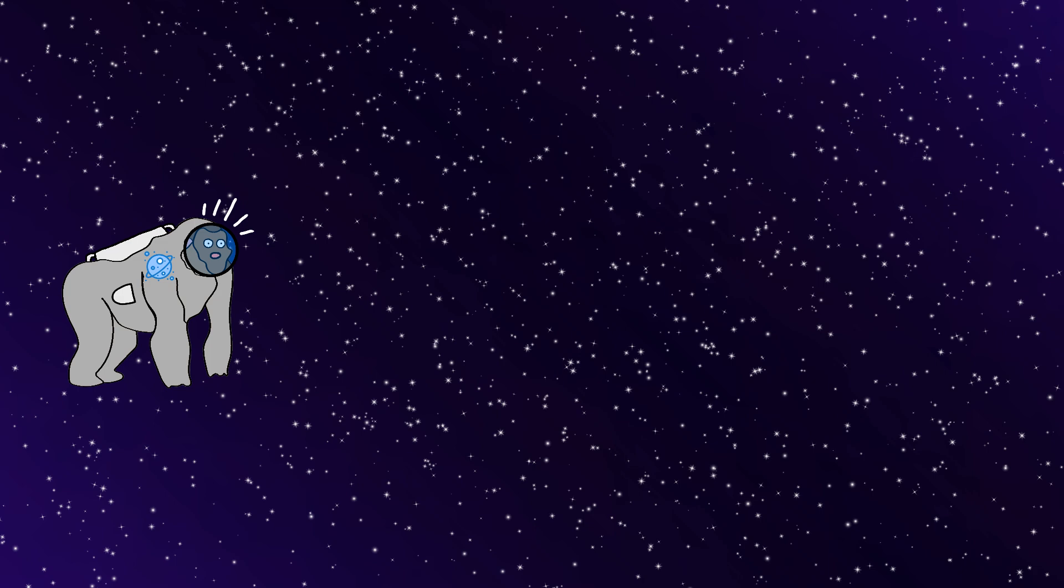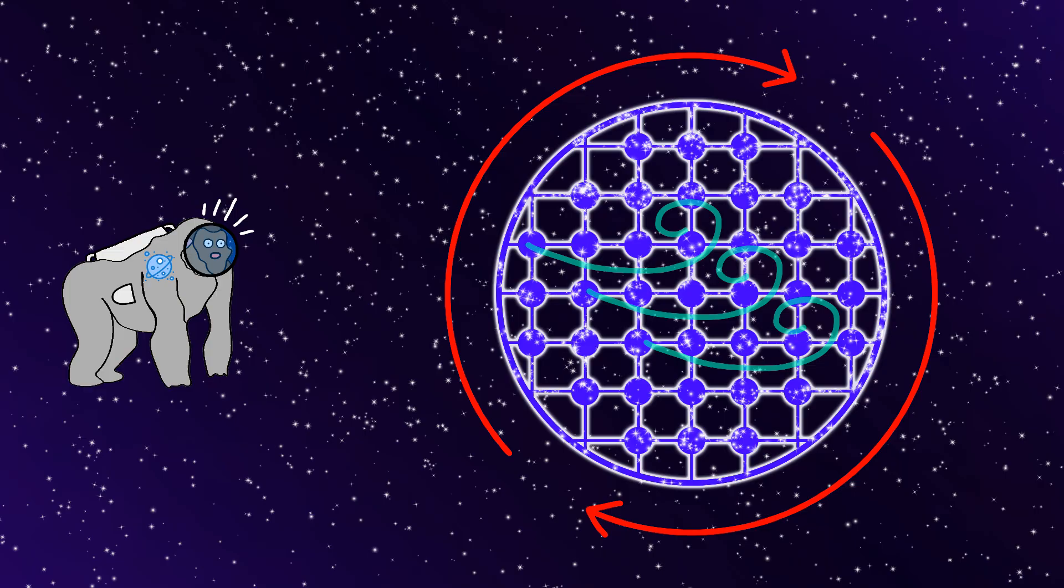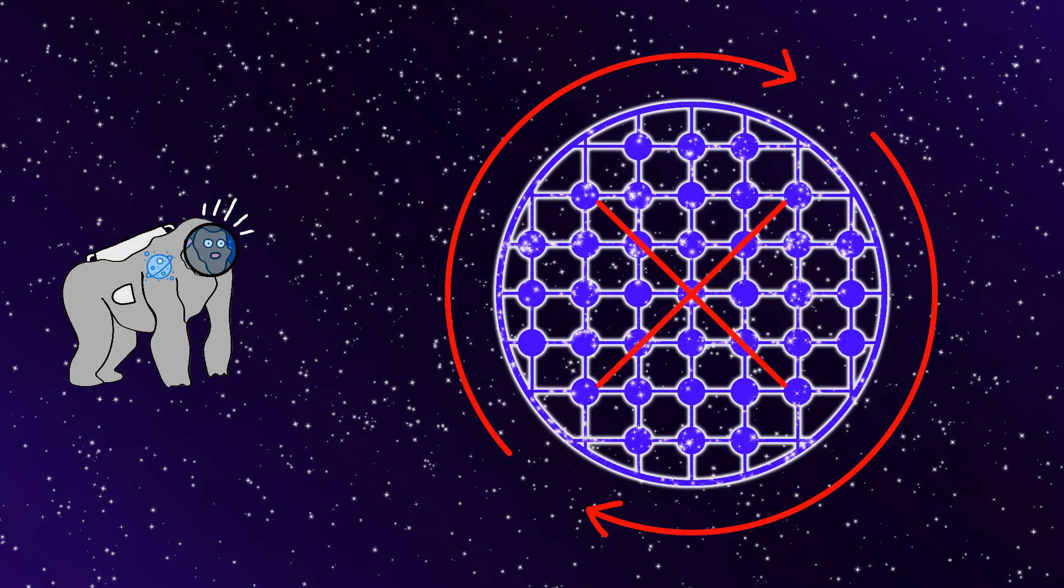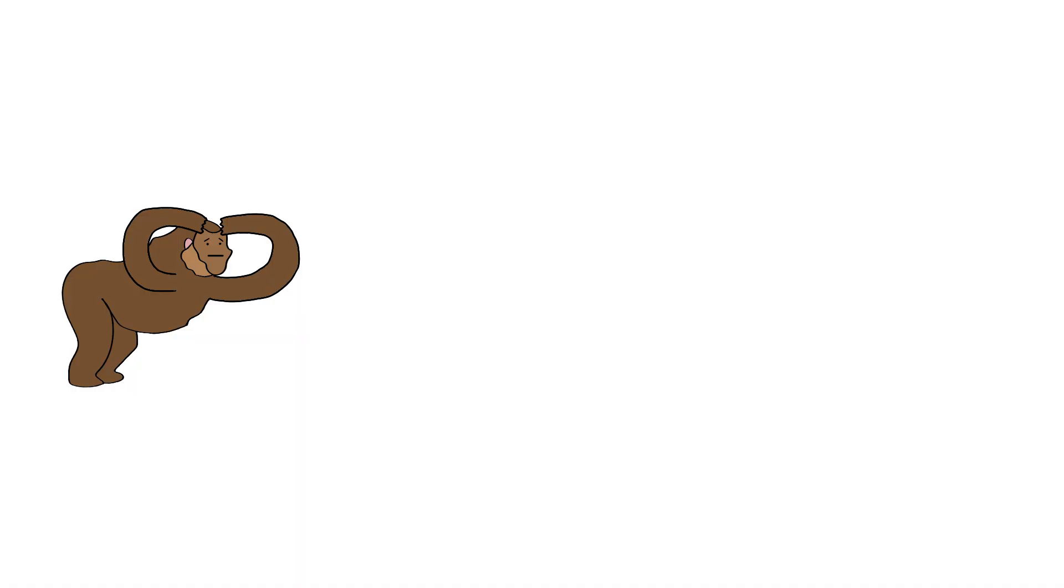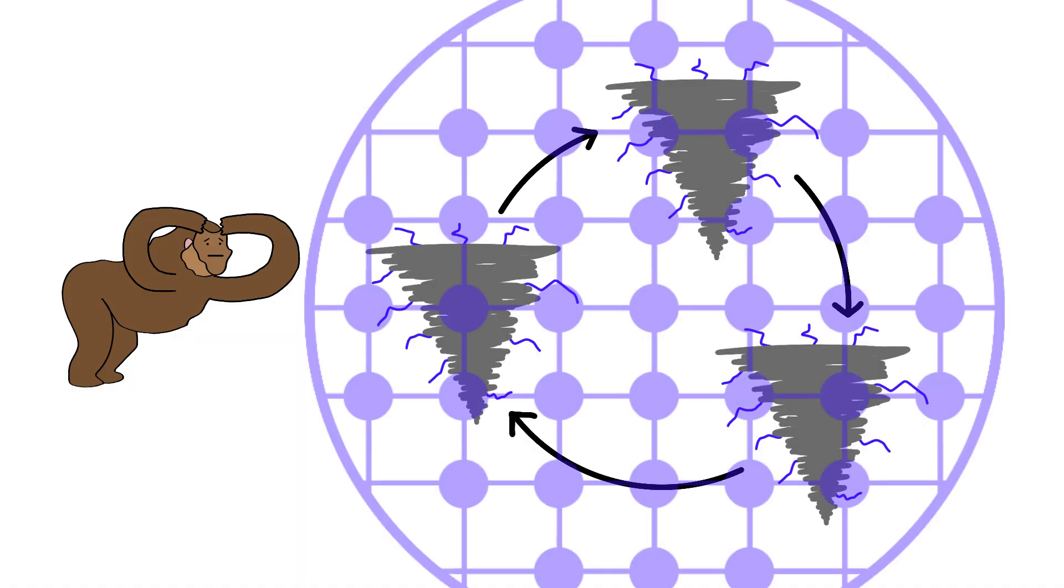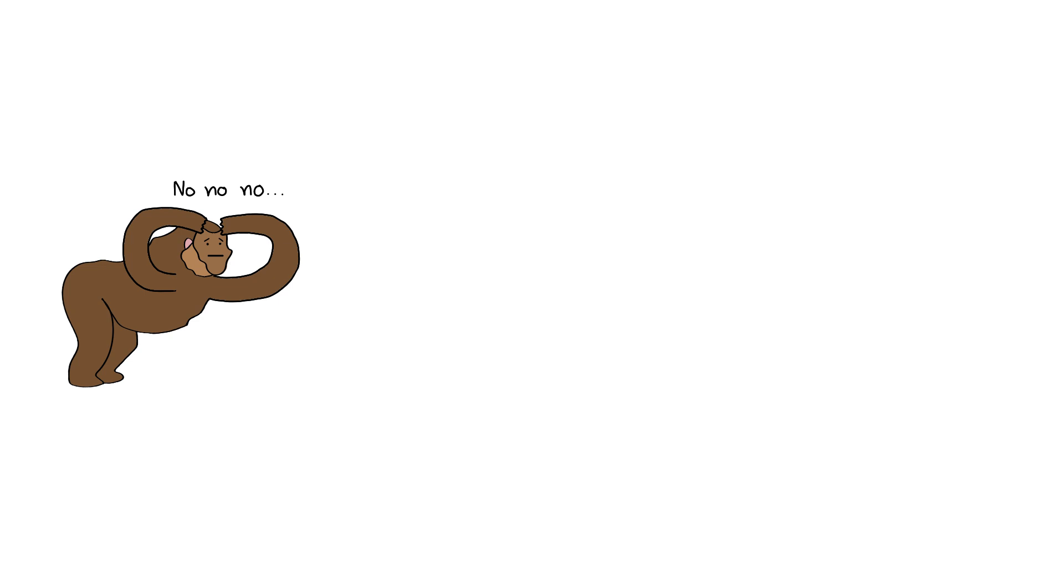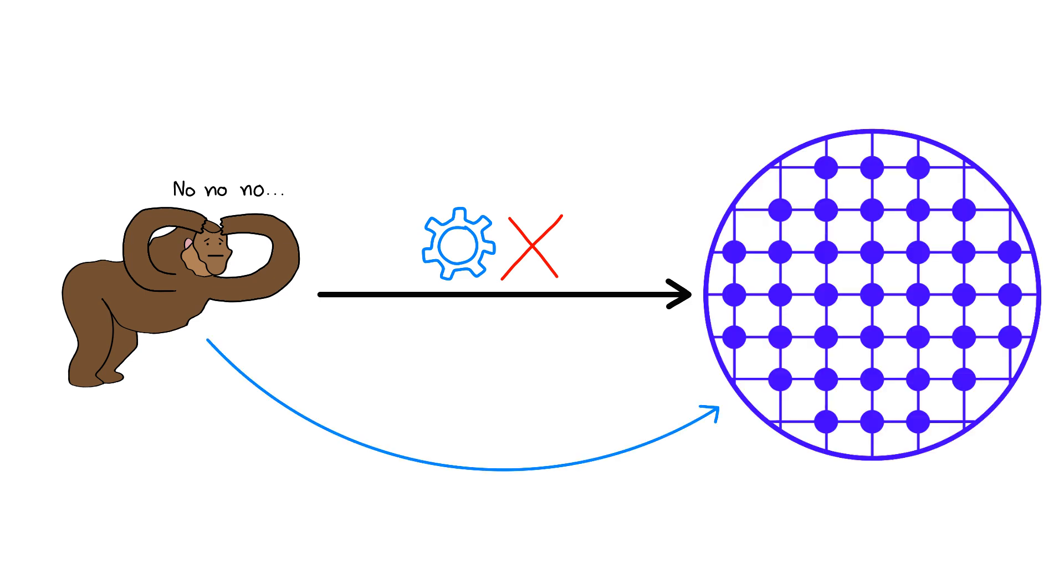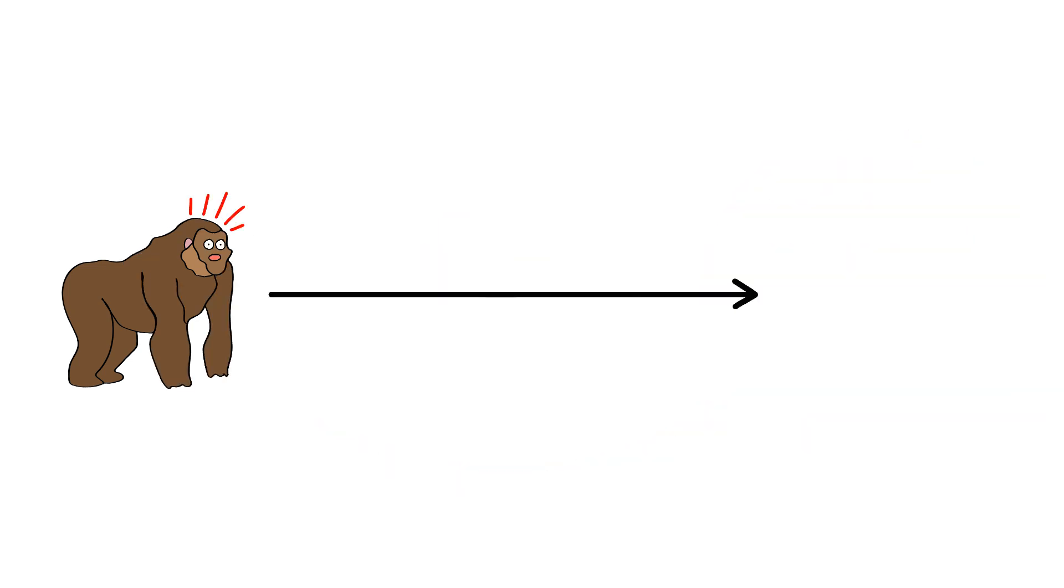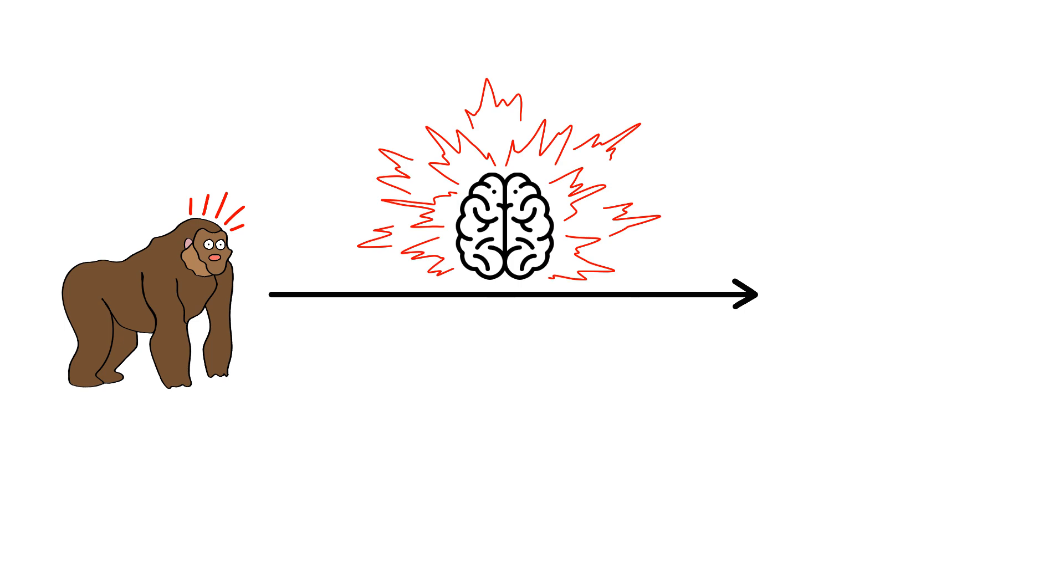Then Monkey notices the sphere's massive size is creating its own weather patterns and atmospheric currents that never existed before. And Monkey's getting these incredible storms that circle the entire inner surface, creating weather phenomena that are beautiful and terrifying and completely unpredictable. And Monkey's losing control of the very system Monkey created. But then Monkey discovers the most mind-shattering truth about this project.